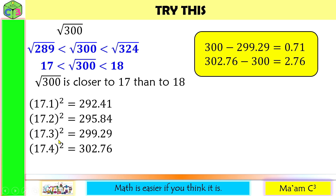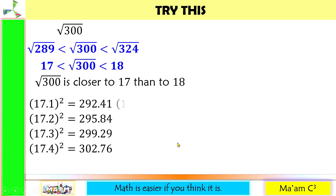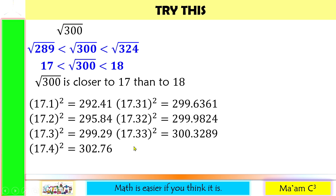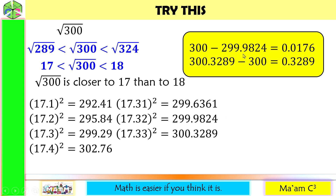Now, I'm going to square numbers with two decimal places closer to 17.3 than to 17.4. These are 17.31 squared, 17.32 squared, and 17.33 squared. Since 17.33 squared is already greater than 300, there is no need to get 17.34 or 17.35 squared. So these are the numbers closest to 300. 300 minus 299.9824 is 0.0176, and 300.3289 minus 300 is 0.3289.